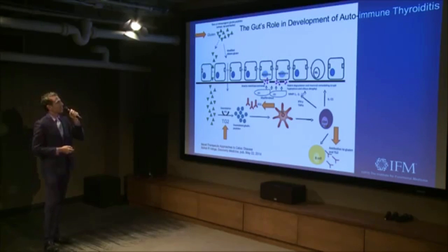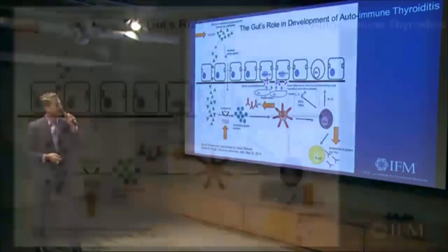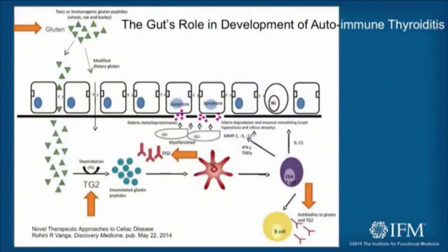Here's a picture of what happens in these patients when they eat gluten. Gluten comes in, and imagine that this is already a slightly compromised gut lining. It's getting through in between the cells — an incompletely digested protein getting through. And it encounters tissue transglutaminase 2, an enzyme that's on the other side in the extracellular space and found inside the cells.